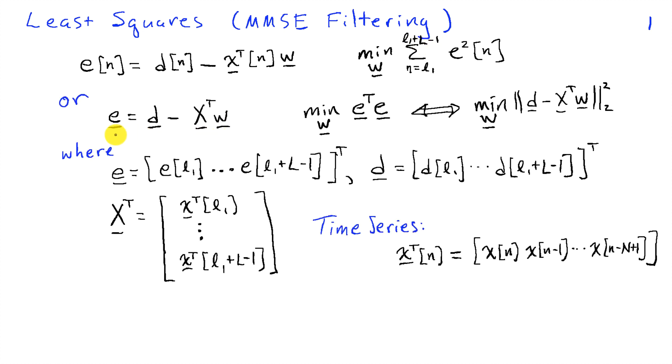We can rewrite this in vector form as a vector e being equal to vector d minus matrix X transpose times w. Then our cost function, or squared error, is just e transpose e. This is equivalent to finding the w that minimizes the squared error between d and X transpose w. I've indicated our definitions of e as taking the vector as samples of the individual elements in the sum, similarly for d, and the matrix X has rows given by the various x transpose vectors that we had in our original problem.